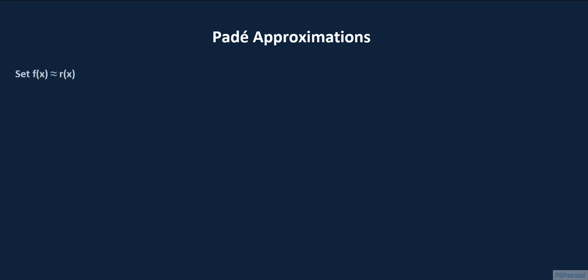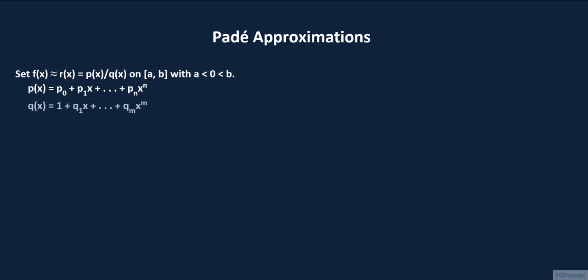In this lecture we determine, with the help of the software Mathematica, the Padé approximation for a given function. Let f be the function whose Padé approximation we are seeking, and let r be the Padé approximation. r is the ratio between two polynomials p and q, where p equals the sum from p sub 0 up to p sub n times x to the nth power, while q of x is the sum from 1 plus q sub 1 times x up to q sub m times x to the mth power. The degree of the Padé approximation is m plus n.